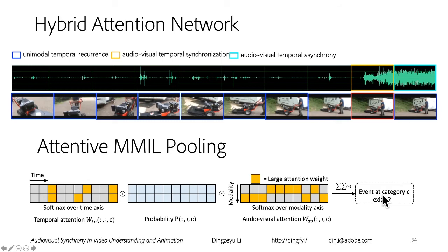For the attentive MMIL pooling process, instead of mean or max pooling, we believe the network has some confidence about where certain events might happen. If we're interested in category C, we have two fully connected networks — an AV attention network and a temporal attention network — that do pre-filtering and assign a confidence level of whether a certain event is happening. If an event is not happening, we can exclude it from the pooling process. When we conduct experiments with these two additions, we see promising improvement, but we quickly ran into an issue.